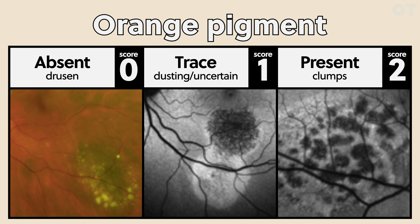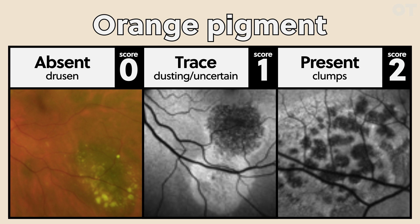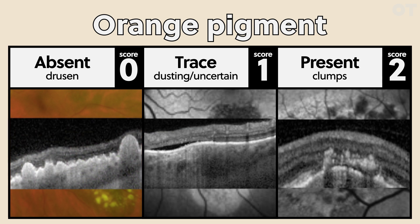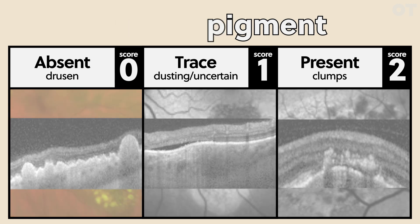If you look at this image on the right, the orange pigment is shining very bright compared to the pigment in the background. And in this image, you can see dusting of orange pigment on the surface. OCT is also helpful for distinguishing between orange pigment and drusen: drusen tend to be underneath Bruch's membrane, whilst orange pigment tends to be above Bruch's membrane.